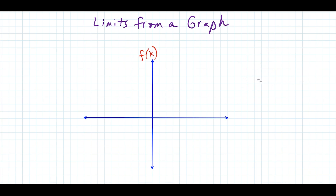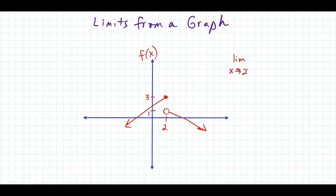I'm going to draw things just a little bit different. Let's say our function has just some segment here and another segment over here. The first y value is going up to 1 and the second one is going up to 3. If I wanted to find the limit as x approaches 2, the left side limit — approaching 2 from the left — is heading towards a y value of 3. So our left side limit is 3.